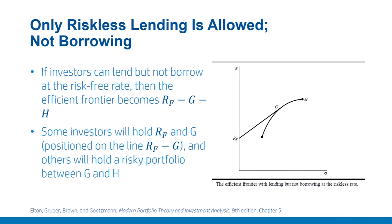Now let us discuss the special case where only riskless lending is allowed and borrowing is not allowed. This is a slightly more practical case, as generally lending at government fixed deposits or various other instruments is available at risk-free rates significantly lower than borrowing rates. Once we put this constraint, the borrowing segment to the right of G is not available. So we have only the lending segment RF to G available, but not the borrowing segment.